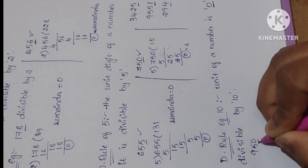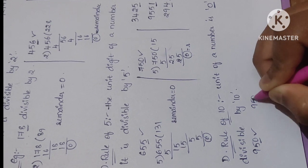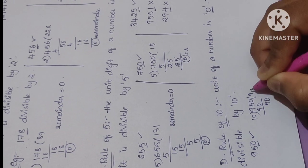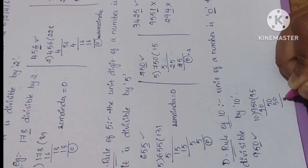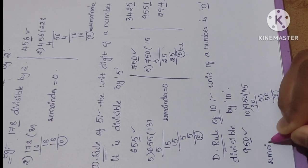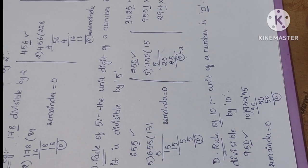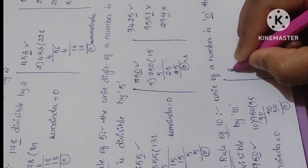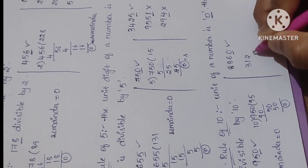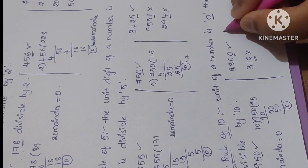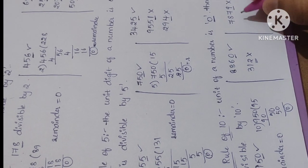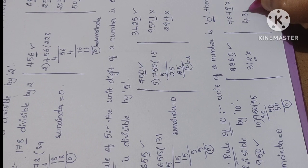Examples for divisibility rule of 10: take 950 — unit digit is 0, so completely divisible by 10. Cross-check: 10 × 95 = 950, remainder 0. Next, 860 — unit digit is 0, divisible by 10. 312 — unit digit is 2, not divisible by 10. 7879 — unit digit is not 0, not divisible by 10. 430 — unit digit is 0, divisible by 10.